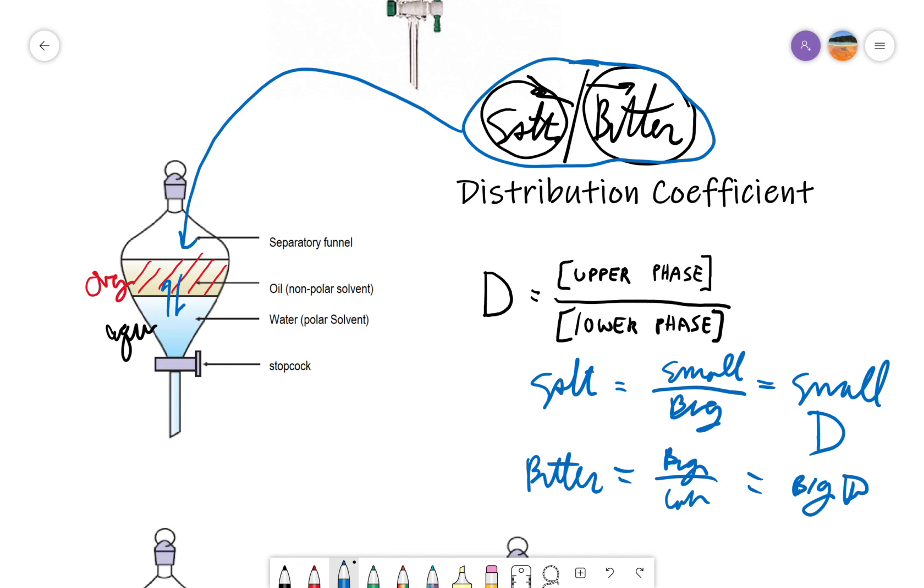If we put that into the separatory funnel and shook it up, the butter would largely dissolve into the organic phase, and the salt would largely dissolve into the aqueous phase. We could then open up the stopcock, drain the aqueous phase out, and therefore physically separate the solution which contained the salt from the solution that contained the butter.